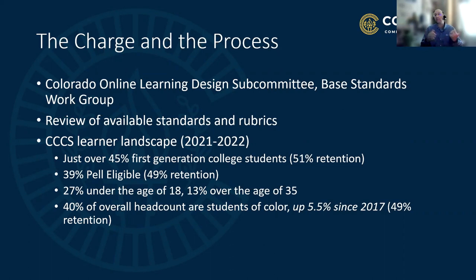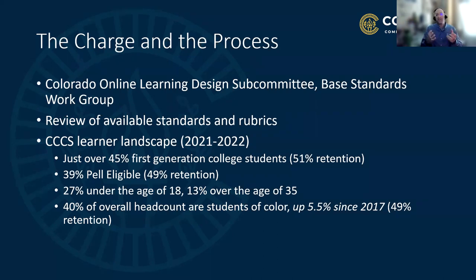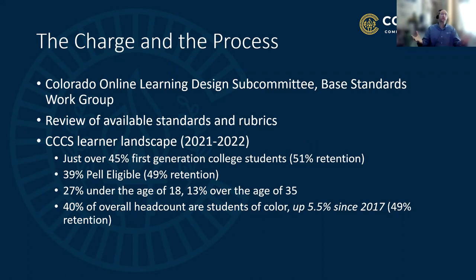About 40% of our overall headcount are students of color, up 5.5% since 2017. Retention numbers show 51% retention of first generation, 49% for Pell eligible, and 49% for students of color. Looking at age, 27% are under the age of 18—a lot of concurrent enrollment, high school students used to consistent K-12 design. About 13% are over age 35 coming back to college, and around 0.7% are over age 65. Our learner landscape is very diverse, and we wanted to bring them into a welcoming environment. One set of standards was not enough.